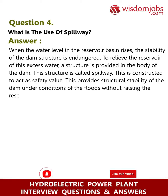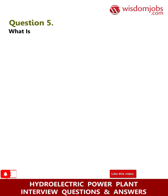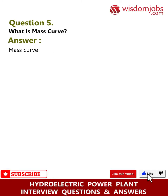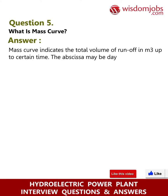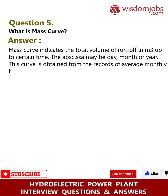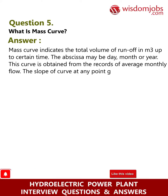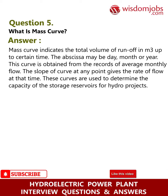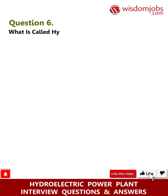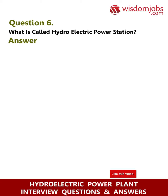Question 5: What is a mass curve? Answer: A mass curve indicates the total volume of runoff in cubic meters up to a certain time. The abscissas may be in days, months, or years. This curve is obtained from the records of average monthly flow. The slope of the curve at any point gives the rate of flow at that time. These curves are used to determine the capacity of storage reservoirs for hydro projects.